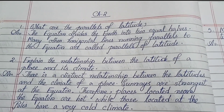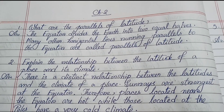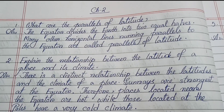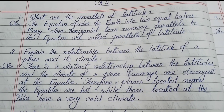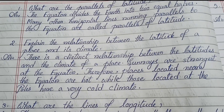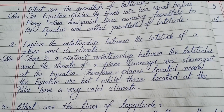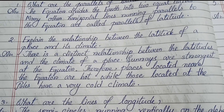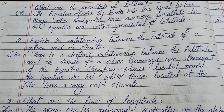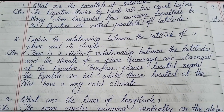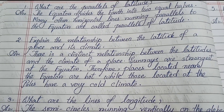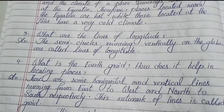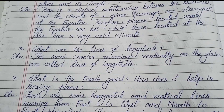Question 1: What are the parallels of latitude? The equator divides the Earth into two equal halves. Many other horizontal lines running parallel to the equator are called parallels of latitude. Question 2: Explain the relationship between the latitude of a place and its climate. There is a distinct relationship between latitudes and the climate of a place. Sun rays are strongest at the equator, therefore places near the equator are hot, while those at the poles have a very cold climate.